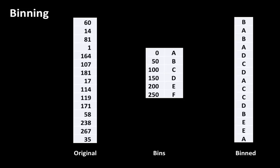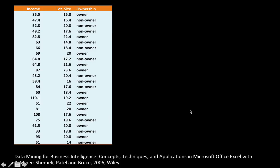This is how you do binning to convert a numerical to a categorical attribute. Now we put the pieces together using an example from the book 'Data Mining for Business Intelligence.' We consider a simple dataset with income of some families, the lot size of their homes, and whether or not they own a riding mower. Given a new person, you want to predict whether they'll buy the riding mower or not.